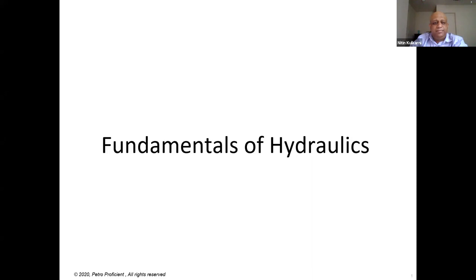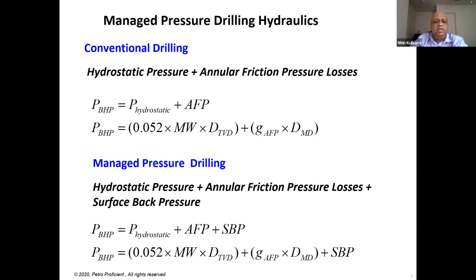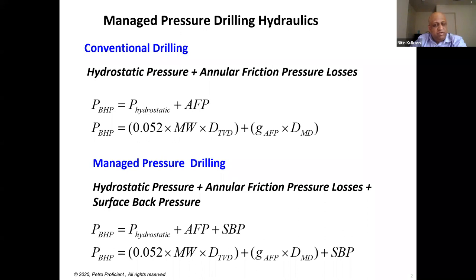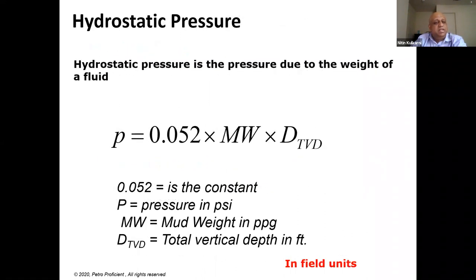Now we move to the second part: fundamentals of hydraulics, an important consideration for planning any MPD operation because of the additional pressure components in the system, like the application of surface back pressure. In conventional drilling, you have hydrostatic pressure and annular friction pressure. In managed pressure drilling, you have an additional component of surface back pressure. Breaking down the equation, you have: bottom hole circulating pressure = hydrostatic pressure + annular friction pressure + surface back pressure.